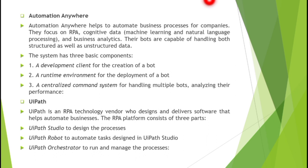The Automation Anywhere platform system has three basic components. The first component is a development client for the creation of a bot — to create your virtual robot you use the development client. The second component is a runtime environment for the deployment of a bot once the robot is developed. The third component is a centralized command system, mainly used for handling multiple robots and analyzing their performance.